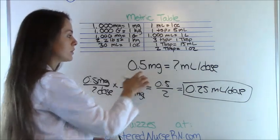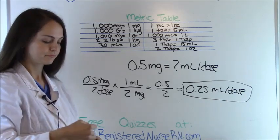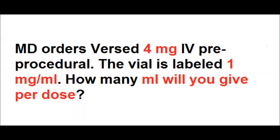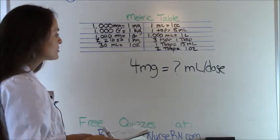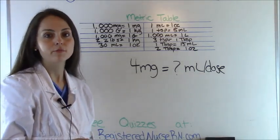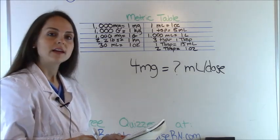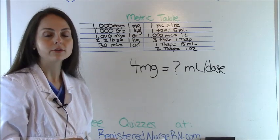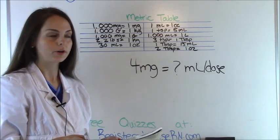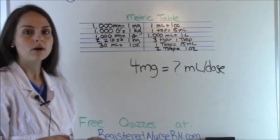Problem two: MD orders Versed four milligrams IV pre-procedural. The vial is labeled one milligram per ml. How many ml's will you give per dose? The doctor has ordered the patient to have four milligrams of Versed before their procedure. We have a vial marked one milligram per ml, so how many milliliters do we draw up to equal the four milligrams ordered?